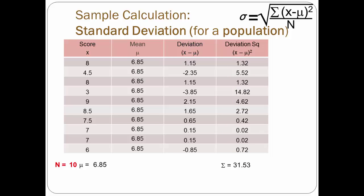As we are calculating for a population, we divide by n, or 10. 31.53 divided by 10, after rounding, is 3.15. So our variance for this population is 3.15. To get the standard deviation, we finish off by taking the square root of variance, which, after rounding, is 1.78 — our standard deviation.